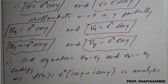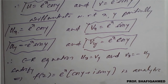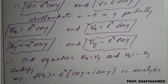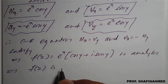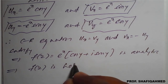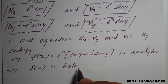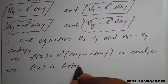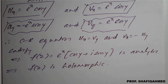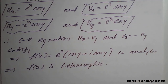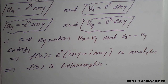Since the function is analytic, and one more name of analytic is holomorphic, this implies f(z) is holomorphic. In this way we solve this example and confirm that the given function is holomorphic.